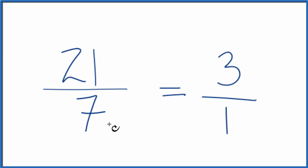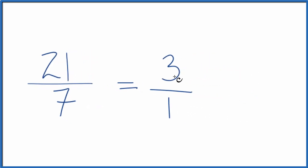So the fraction 21 sevenths, we can simplify that down to 3 over 1. And since 3 over 1, 3 divided by 1, is just 3, we could just have the whole number 3.